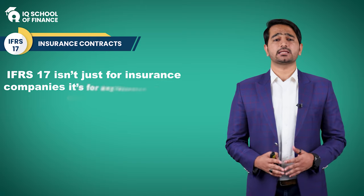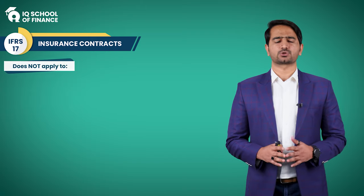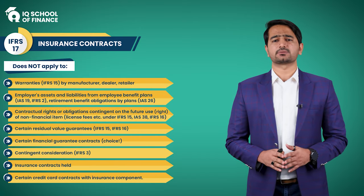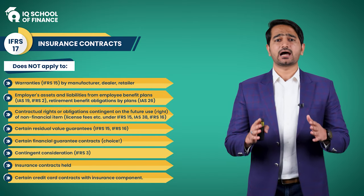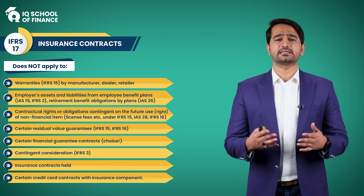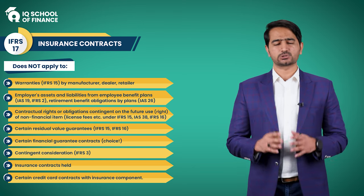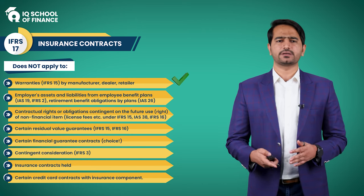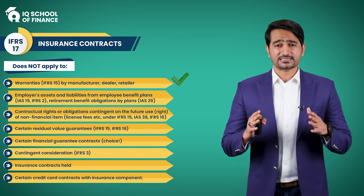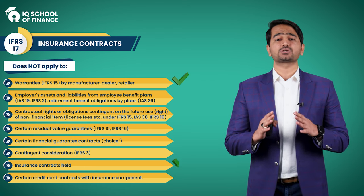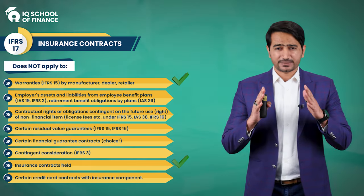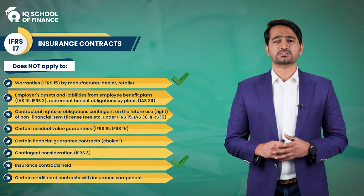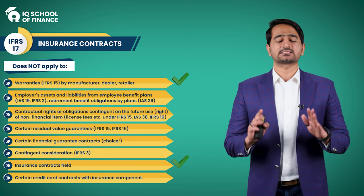Additionally, the standard outlines certain items that don't fall under its scope, which you can view on screen. Always check the standard for similar items. There are items that can potentially meet the definition of an insurance contract but are actually excluded, such as product warranties issued by a manufacturer, dealer, or retailer. Also, IFRS 17 does not apply to insurance contracts held — if you purchase an insurance policy, pay the premium, and receive coverage, IFRS 17 does not apply to those.